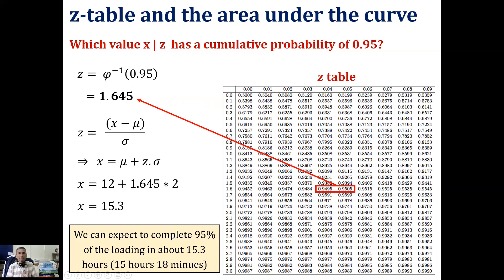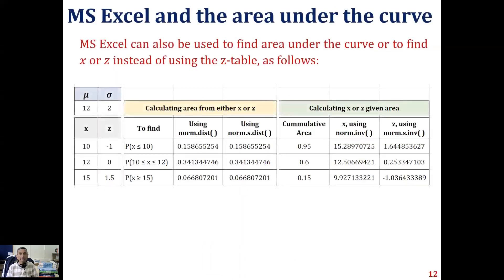So we can use the z table in both directions: given the area we can find z and thereby x, or given x we can find z and the probability. There is also another way that is even easier, and that is by using MS Excel. I'm going to show you how to use Excel to find the area under the curve for the same problem.